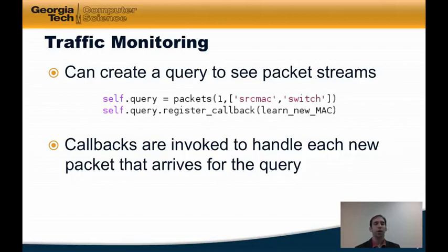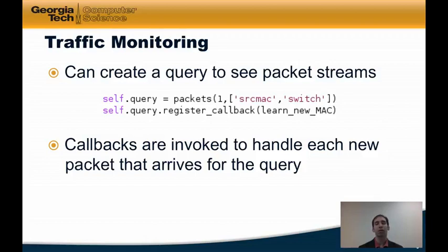Traffic monitoring allows the programmer to create a query to see certain packet streams. For example, the programmer can create a query that returns the first packet with a unique source MAC address at a particular switch. Given that packet stream, the programmer can then register a callback that executes a function on the resulting stream of packets. These callbacks are invoked to handle each new packet that arrives with the query. We'll see an example of callbacks very soon when we look at the implementation of a learning switch in Pyretic.